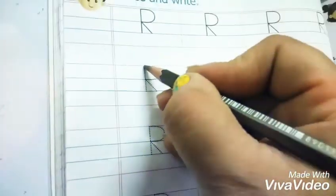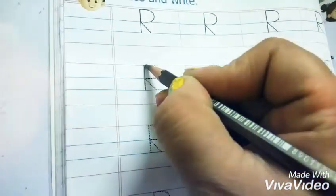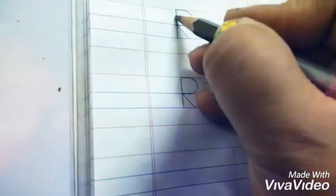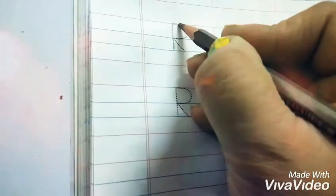So let's write letter R. How to write letter R? First of all you have to trace the letter R like this, on the small dots. Like this. R.